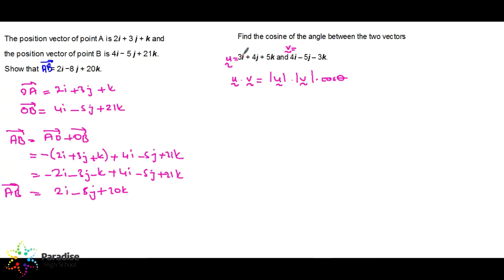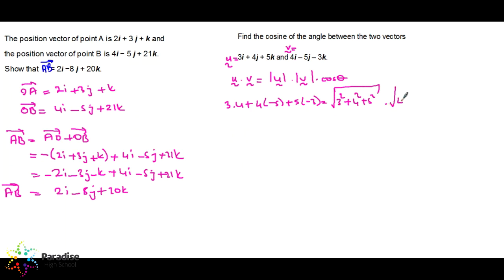Compute the scalar product by multiplying coefficients of the same components: (3×4) + (4×−5) + (5×−3). The magnitude of u is √(3² + 4² + 5²) and the magnitude of v is √(4² + (−5)² + (−3)²). That gives 12 − 20 − 15, and the magnitudes both equal √50.